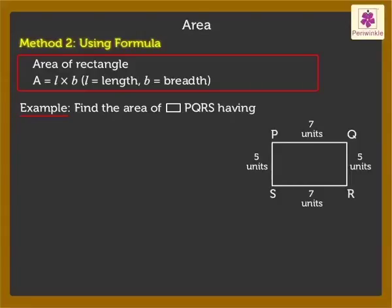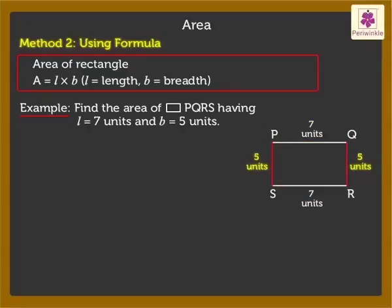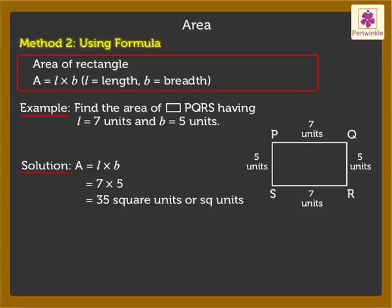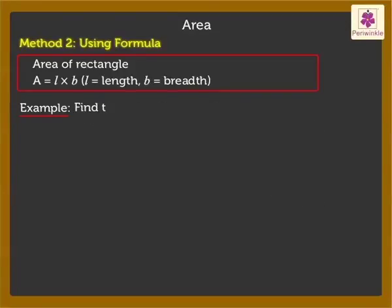Let's use this formula to find the area of rectangle PQRS having length 7 units and breadth 5 units. Using the formula, area = length × breadth, we get the area as 35 square units.